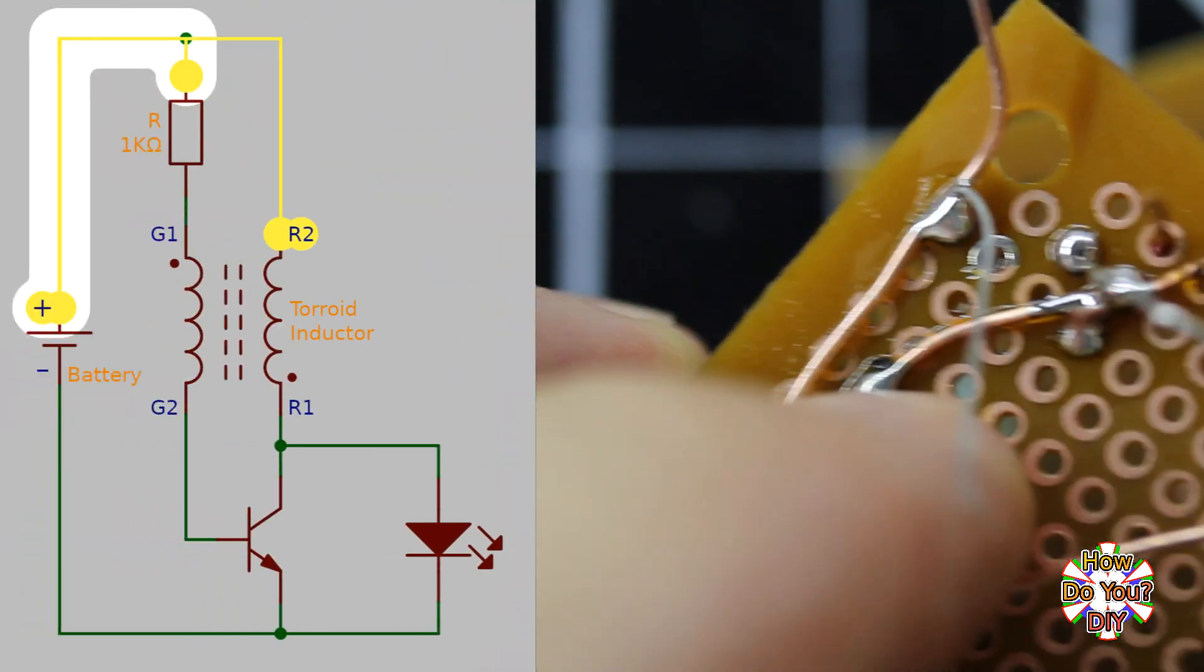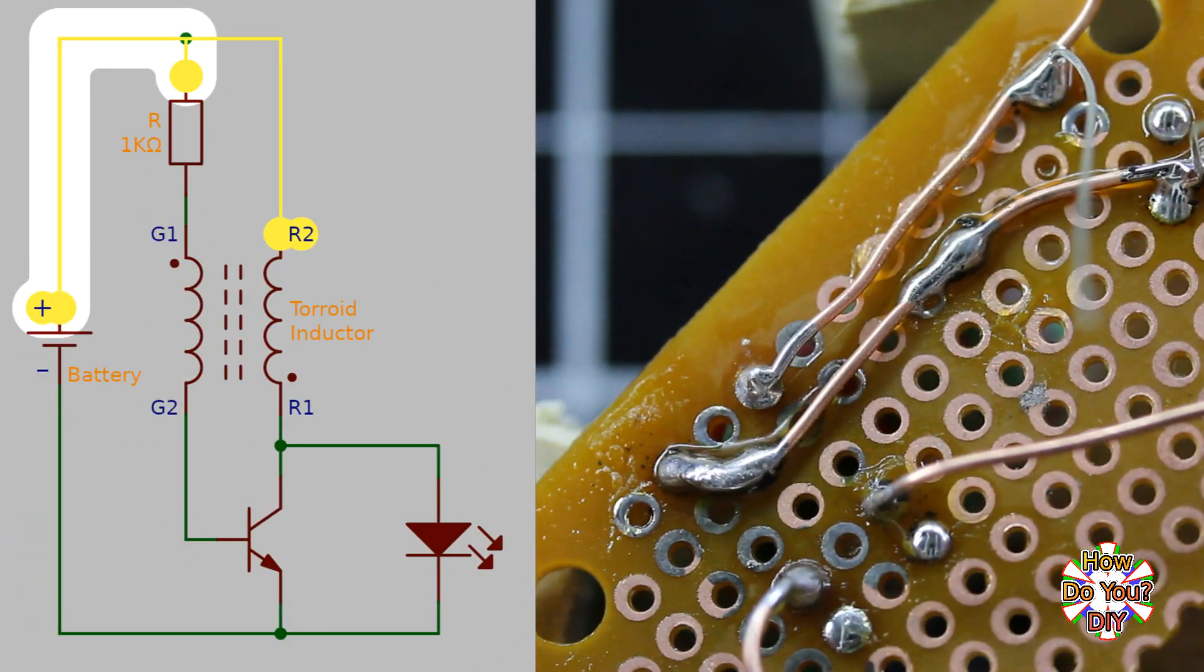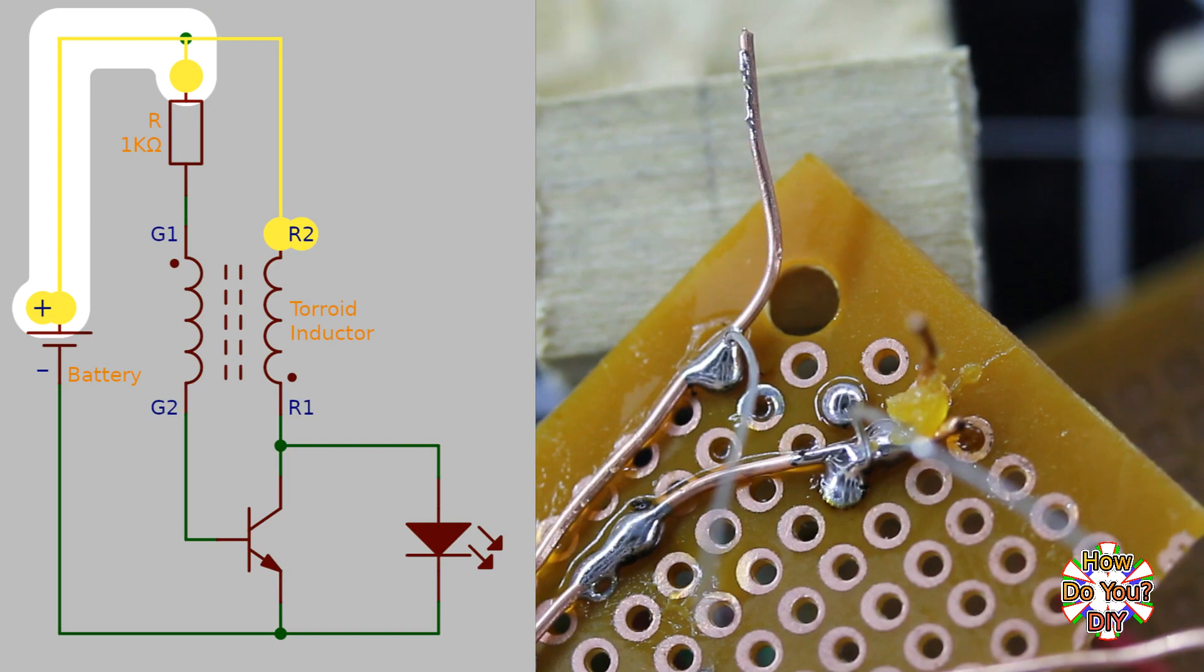This red wire is for the battery positive. It also connects to the same resistor at the same point as R2.